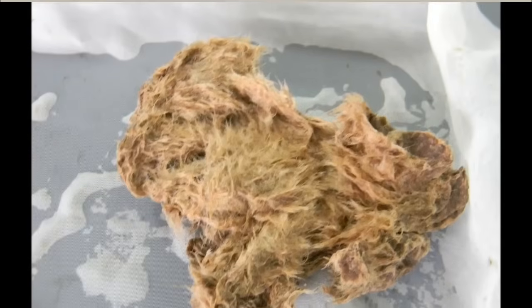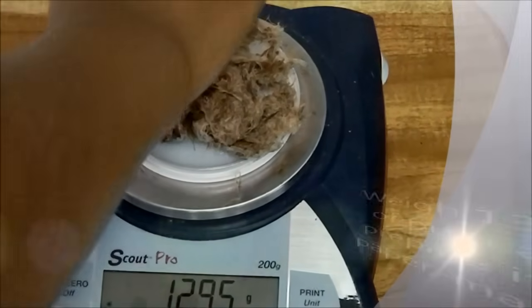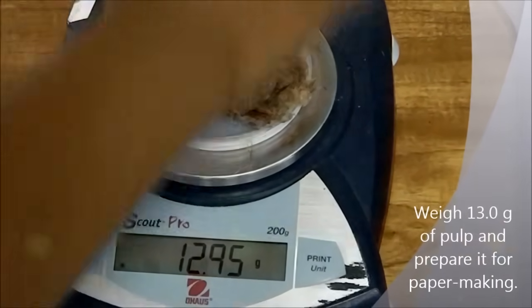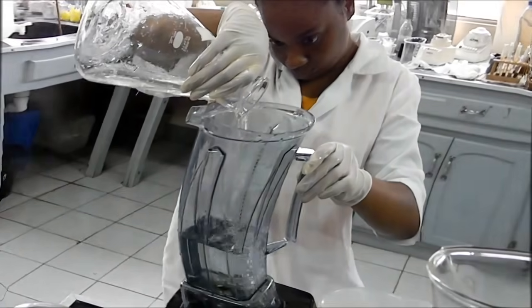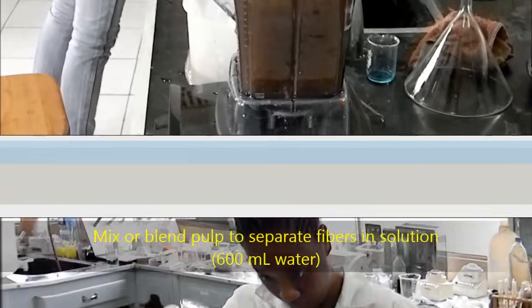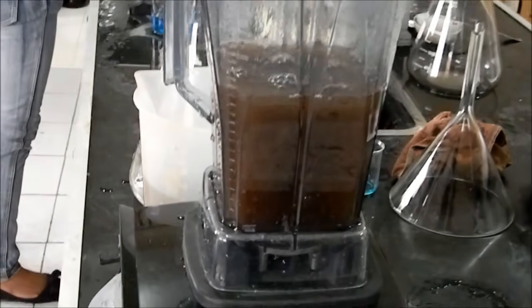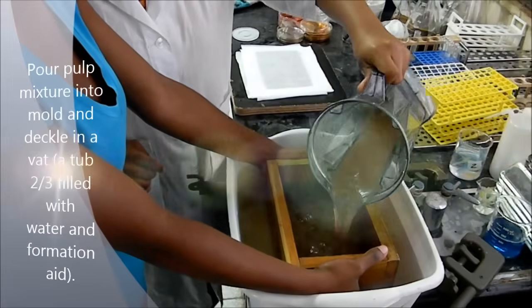You take this pulp and you can weigh out maybe 13, 15 grams or more of the squeezed pulp. And put that back into a blender. Blend it until it separates. And then you pour that in what is called the mold and deckle.